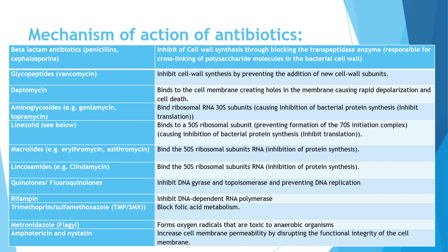To summarize: we have two antibiotics on the cell wall, two on the cell membrane, four on the ribosomal RNA, and two on DNA and RNA. Additionally, trimethoprim-sulfamethoxazole (Bactrim) inhibits folic acid metabolism, and metronidazole works against anaerobes through formation of oxygen radicals, which are toxic to anaerobes. This table from my book gives a very useful summary of antibiotic mechanisms used in orthopedics.